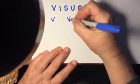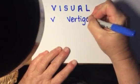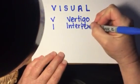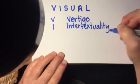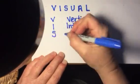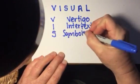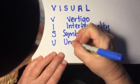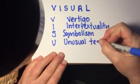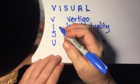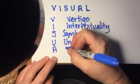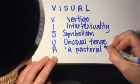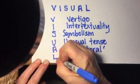Your V will be Vertigo. Your I, Intertextuality. Your S, Symbolism. U, Unusual Tense. Your A, the subtitle 'A Pastoral'. And your L, Language.